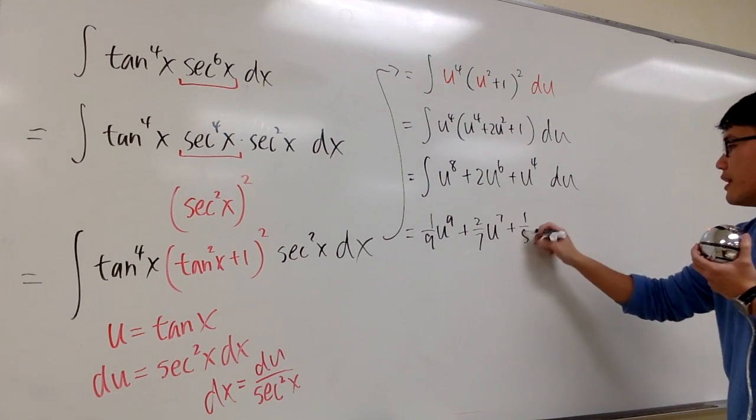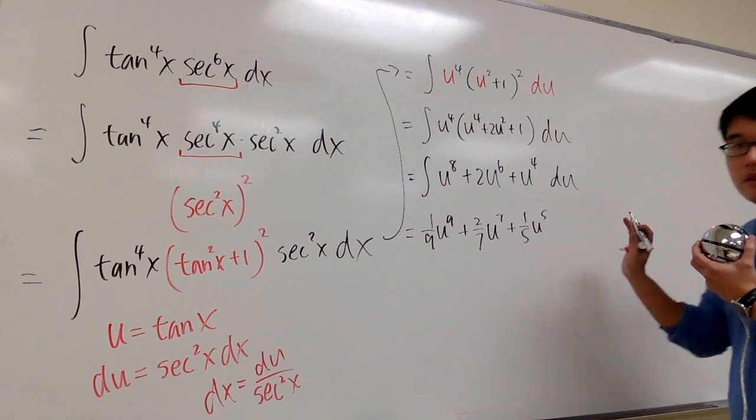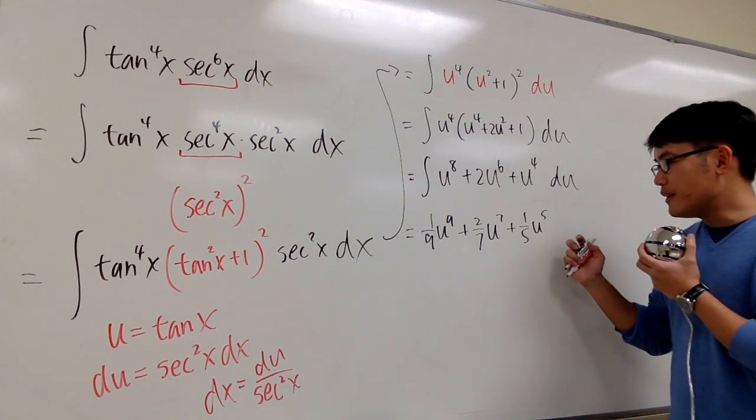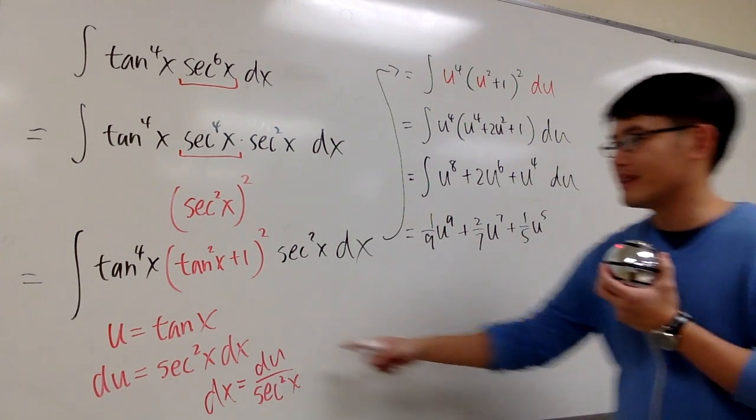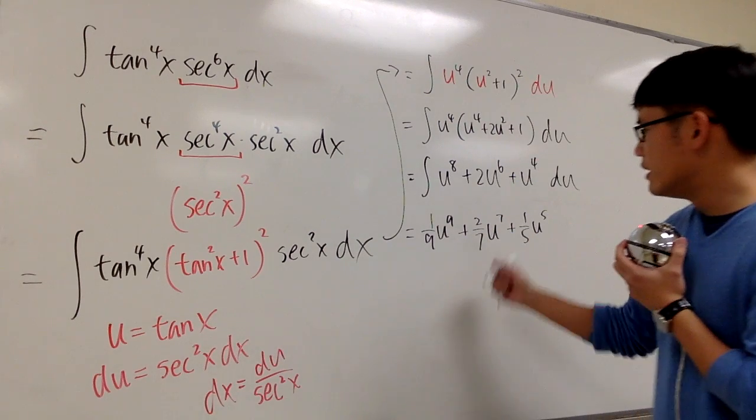And this is going to be plus 1 over 5, u to the 5th power. And then the final step is, all the u's, it's just nothing but tangent x.